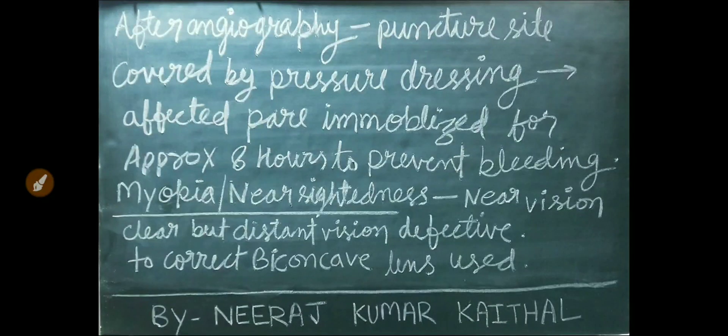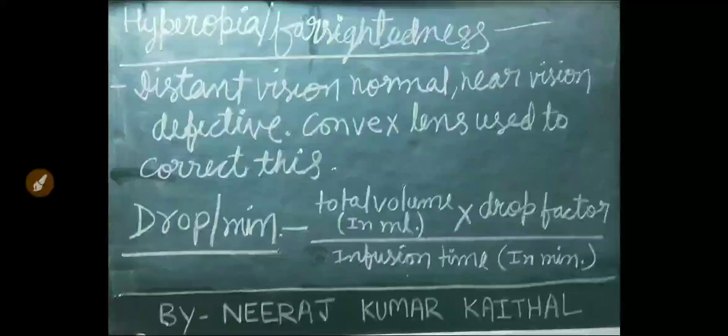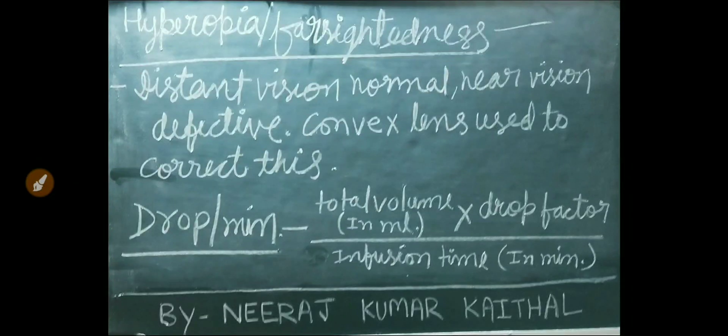Myopia or near-sightedness: near vision is clear but distant vision is defective. To correct this problem, use a biconcave lens. Hyperopia or farsightedness: distant vision is normal but near vision is defective. A convex lens is used to correct this problem.